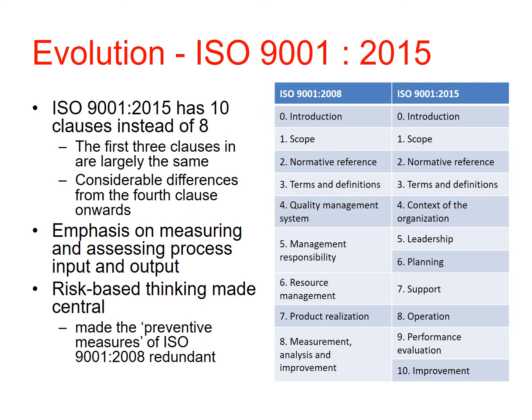In 2015, there was another major change to ISO 9001. The number of clauses changed from 10 to 8. The first three clauses remain broadly the same, covering introduction, scope, normative references, and terms and definitions. From clause four onwards, emphasis shifted much more to measuring and assessing process input and output. Risk-based thinking was made central, which made previously separate preventative measures in the prior series redundant. This is useful context when working in a new organisation where people may be used to older ISO 9000 standards — if you see only eight clauses and think there should be ten, this is why.